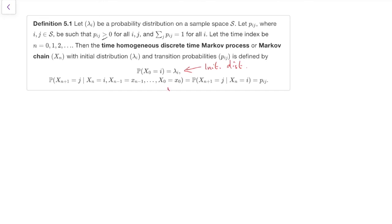And in the second line, the first equality is telling us we have the Markov property. Right, that's telling us that it only matters where we are now, and the history, all this stuff, doesn't come in.